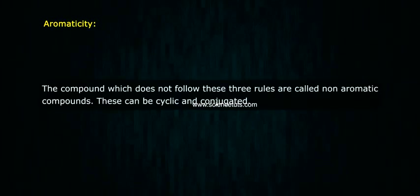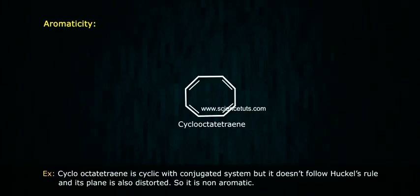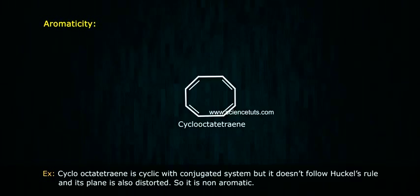Compounds which do not follow these three rules are called non-aromatic compounds. These can be cyclic and conjugated. For example, cyclooctatetraene is cyclic with a conjugated system, but it does not follow Hückel's rule and its plane is also distorted, so it is non-aromatic.